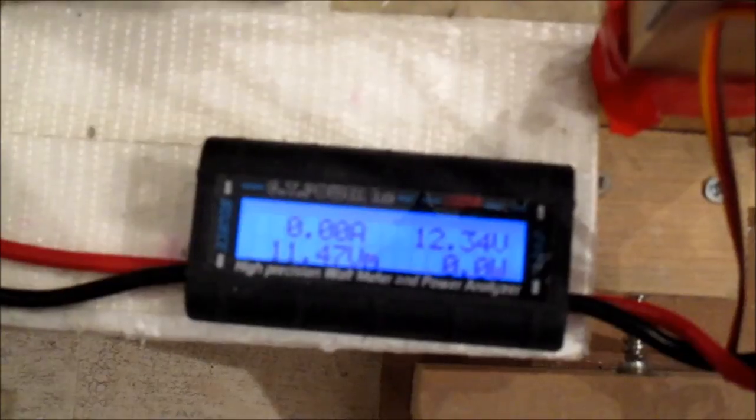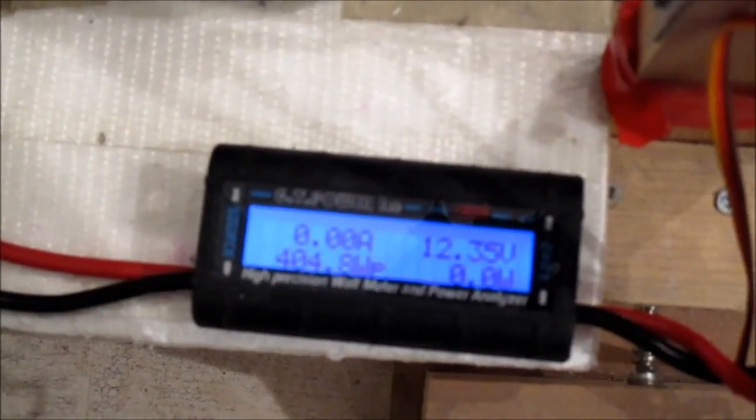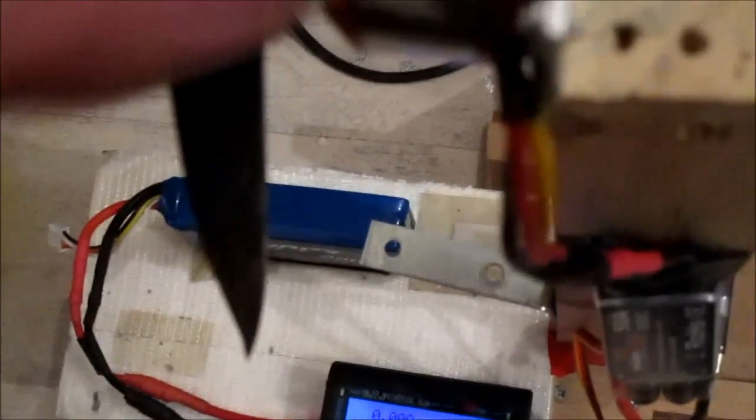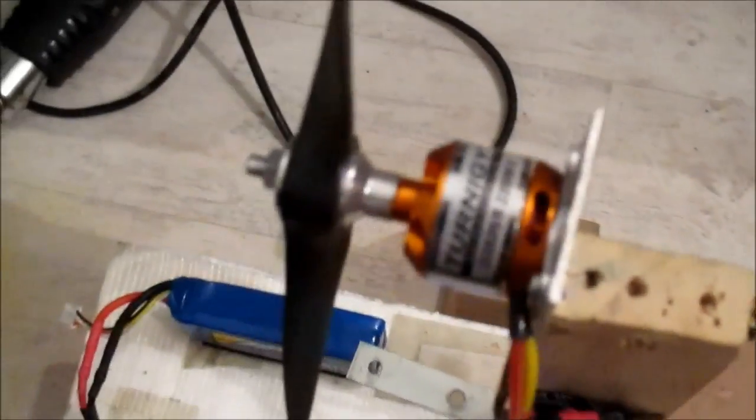1300 grams of thrust. 34.6 amps, 404 watts. That's not bad, it turns a 7x3. Alright, let's see what it does on the 4-cell.